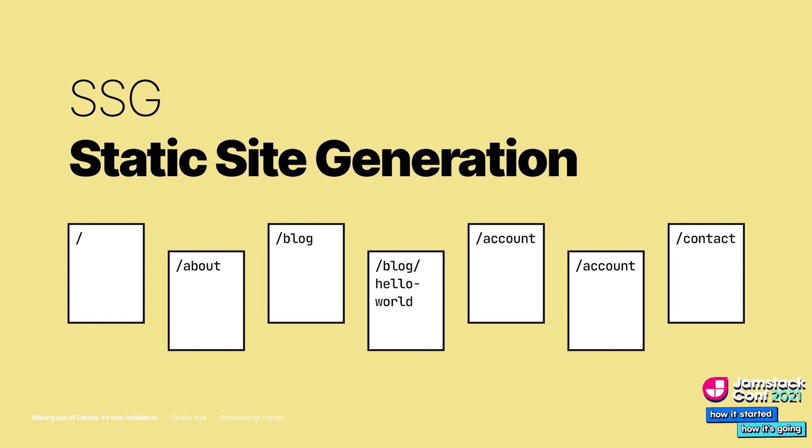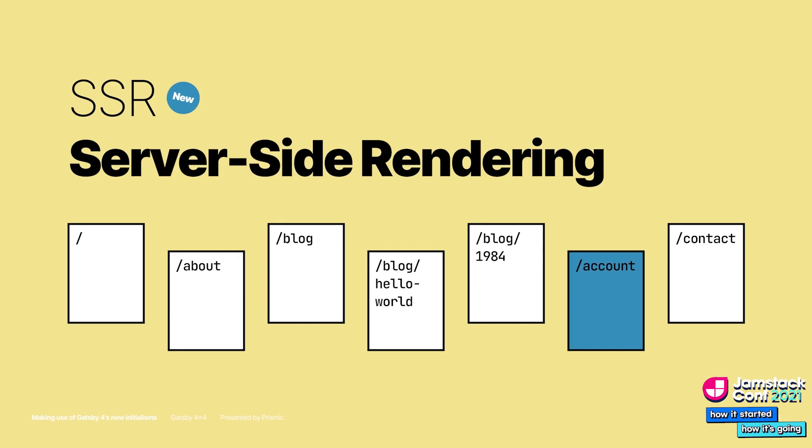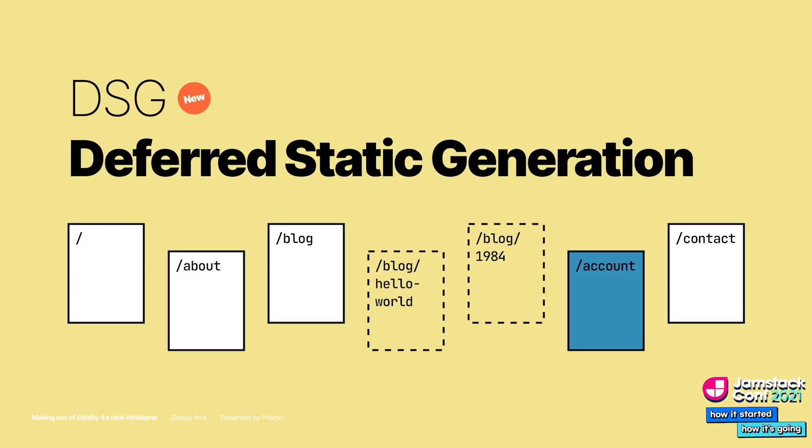SSG, what Gatsby has been known for, allows you to build everything statically. SSR is about rendering pages on the server where you can access APIs or databases. DSG allows you to build pages when the first visitor requests the page, then saves it for future visitors.